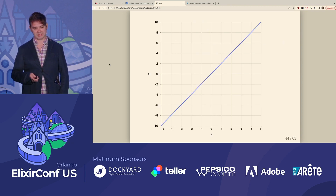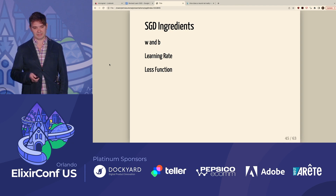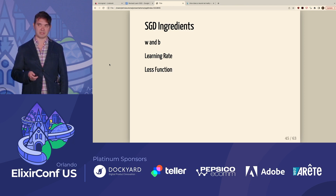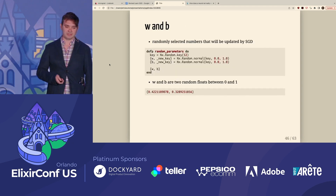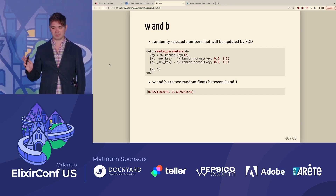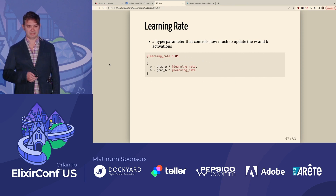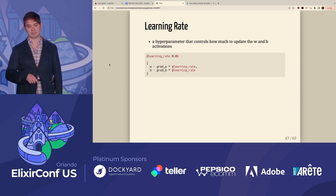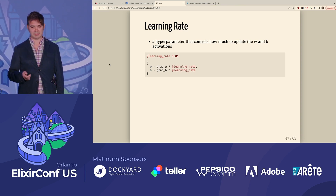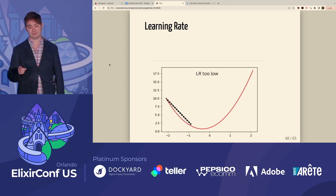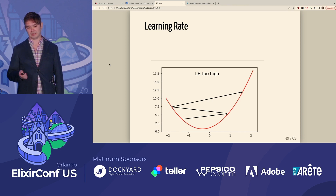Again, here's our friend Y equals 2X — this is what we're going to solve for using SGD. The ingredients we need are W and B, a learning rate, and a loss function. W and B are code attributes in machine learning, and they're simply two random numbers — the numbers we will be updating in order to fit the function. The learning rate is a hyperparameter, something you as the machine learning practitioner get to set. It's typically a very small number because you don't want it too small or it'll take a very long time to fit, but conversely, too high and SGD might never find the local minimum.